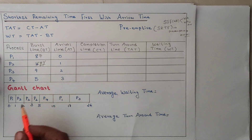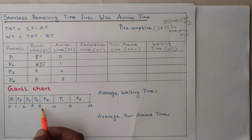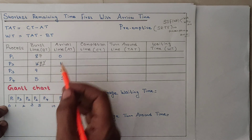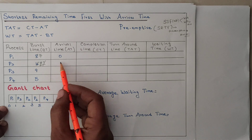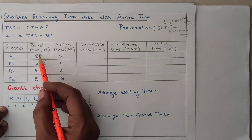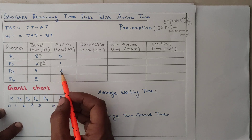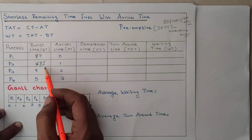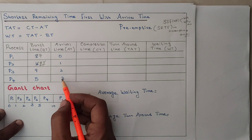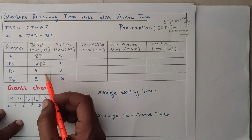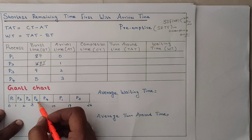At each arrival time you have to draw a Gantt chart — that is very important in SRTF. To recap: from 0 to 1, P1 executed. At 1st millisecond P2 arrived — compare burst times, P2 has shortest job, P2 starts executing. At 2nd millisecond P3 arrived — compare again, P2 is still smaller. At 3rd millisecond P4 arrives — check shortest job, P2 still has the shortest job, so P2 gets executed.